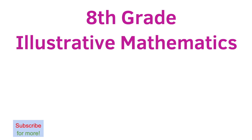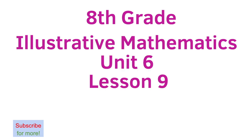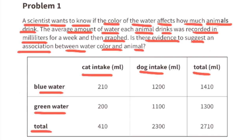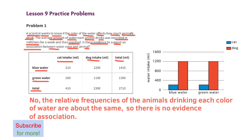8th grade Illustrative Mathematics, Unit 6, Lesson 9: Looking for Associations. Problem 1: A scientist wants to know if the color of water affects how much animals drink. The average amount of water each animal drinks was recorded in milliliters for a week and then graphed. Is there evidence to suggest an association between water color and animal drinking? No — the relative frequency of the animals drinking each color of water are about the same, so there is no evidence of association.